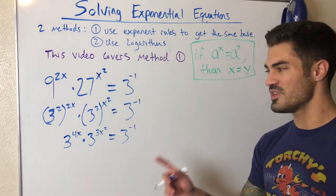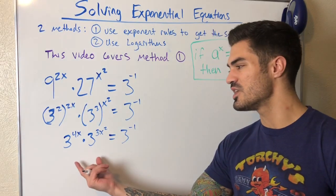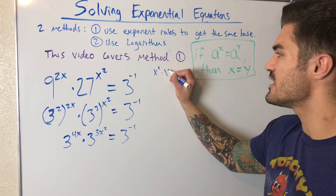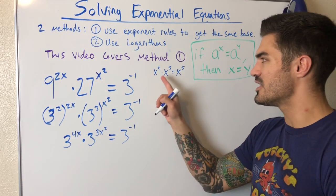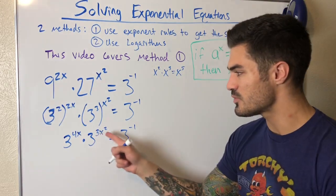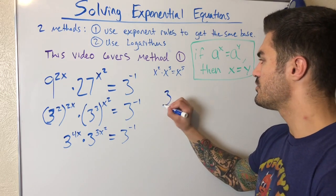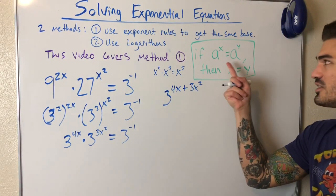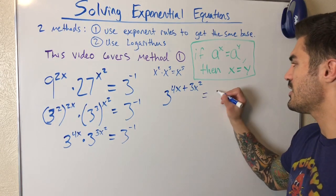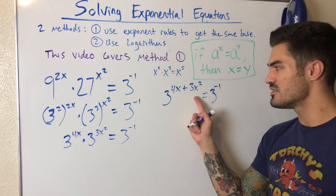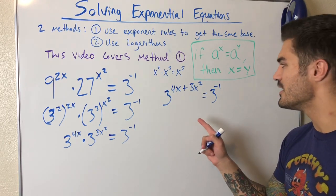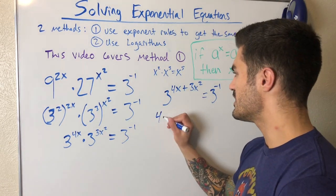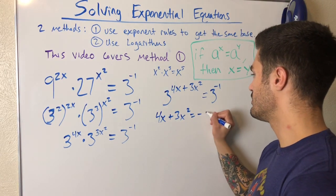This is the tricky part because now we have to remember exponent rules. When we multiply two things with the same base, what happens? We add the exponents. Think of something like x squared times x cubed, we'd write that as x to the fifth. We add the exponents, three plus two. So in this case we're adding the exponents and we can combine these. Three to the four x plus three x squared. The reason we do this is because we want to get one thing on each side with the base so we can set these equal to each other. Now I have all this equals three to the negative one. That means everything up here must equal negative one. So four x plus three x squared equals negative one.